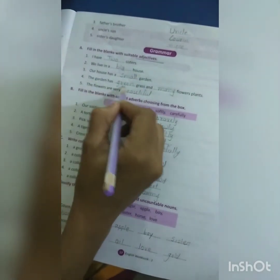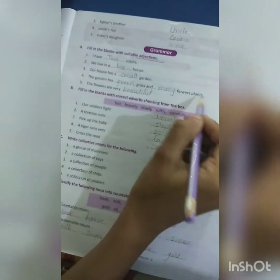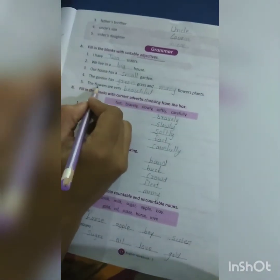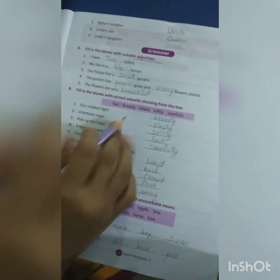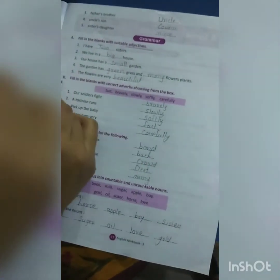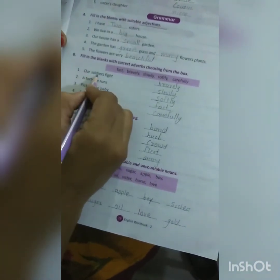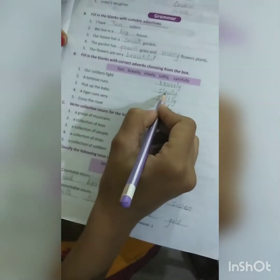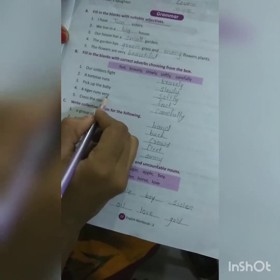The garden has green grass and many flower plants. Number five: The flowers are very beautiful. Exercise number B: Fill in the blanks with the correct adverb, choosing from the box. Our soldiers fight bravely. A tortoise runs slowly. Pick up the baby softly. A tiger runs very fast. Cross the road carefully.